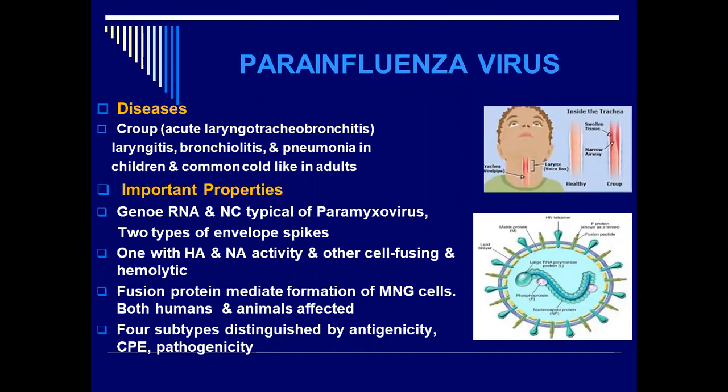Based on antigenic variation, pathogenic potential, and effect on cell culture, we have four subtypes of the parainfluenza virus: one, two, three, and four.